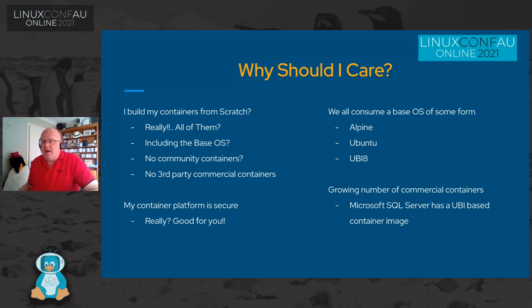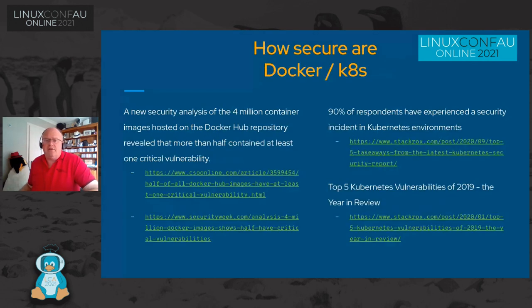Most of us will consume some kind of base OS for building our container images. How far do you trust it — whether it's Alpine, Ubuntu, or the UBI image? UBI 8 is a freely redistributable RHEL 8 container image from Red Hat that a number of commercial vendors are starting to use. Things like Microsoft SQL Server are available based off the RHEL UBI 8 image. So if you're consuming commercial containers, how far do you trust them? How recently were they patched? How are you going to avoid a potential security risk? The StackRox analysis that happens regularly is always quite enlightening — there are always new reports on the number of containers on Docker Hub with vulnerabilities. There was a new Kubernetes vulnerability reported just last week. So no matter what you're doing, there's always a risk.